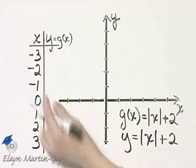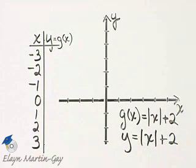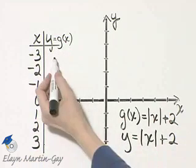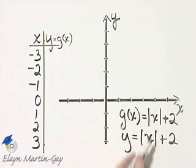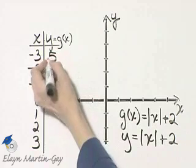Either way, we're going to write down ordered pair solutions of our function. If x is negative 3, here or here, it makes no difference. The absolute value of negative 3 is 3, and 3 plus 2 is 5.